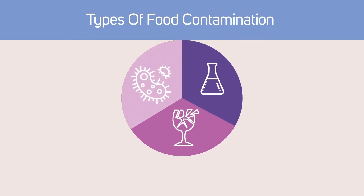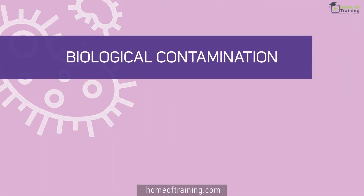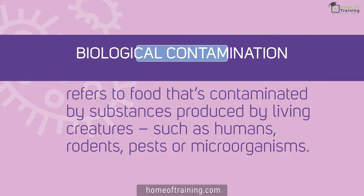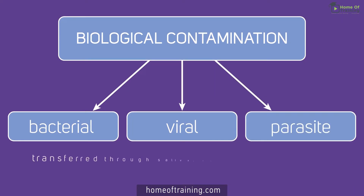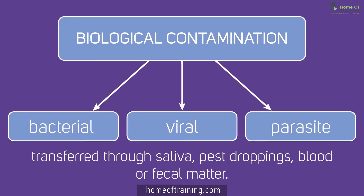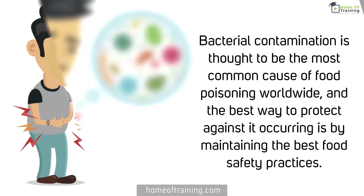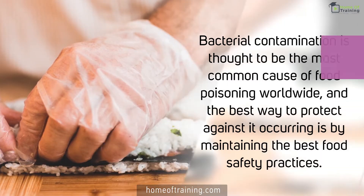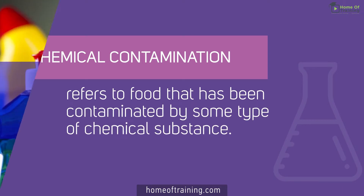There are three different types of food contamination: biological, chemical, and physical. Biological contamination refers to food that's contaminated by substances produced by living creatures such as humans, rodents, pests, or microorganisms. This includes bacterial contamination, viral contamination, or parasite contamination that's transferred through saliva, pest droppings, blood, or fecal matter. Bacterial contamination is thought to be the most common cause of food poisoning worldwide, and the best way to protect against it is by maintaining the best food safety practices.